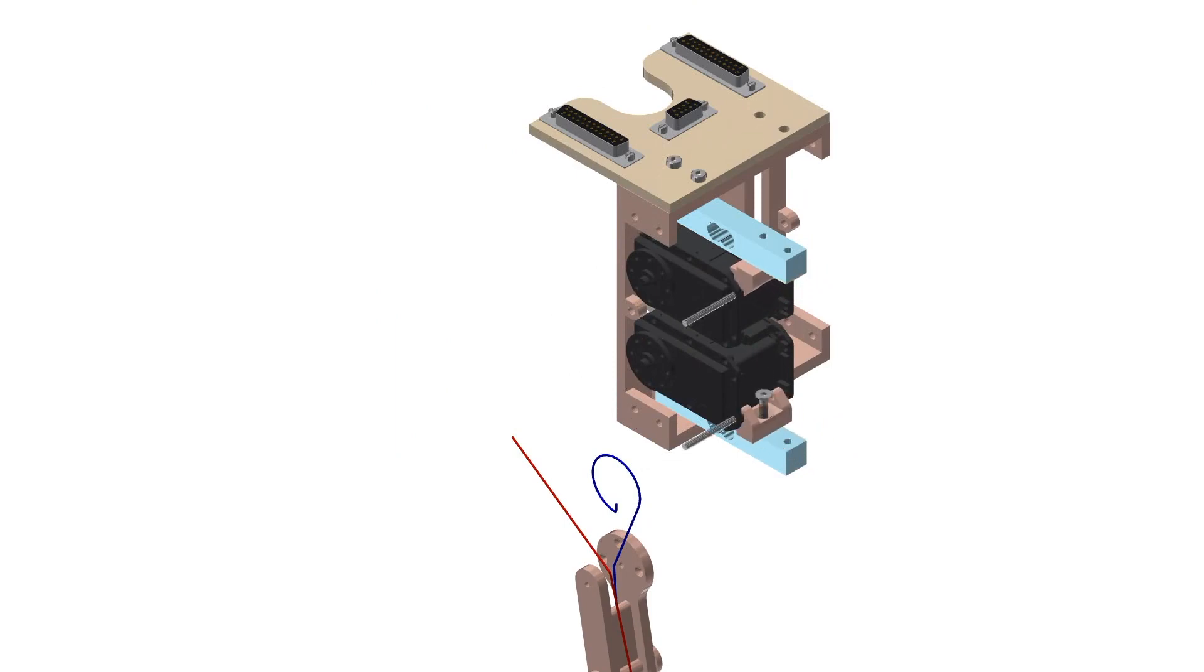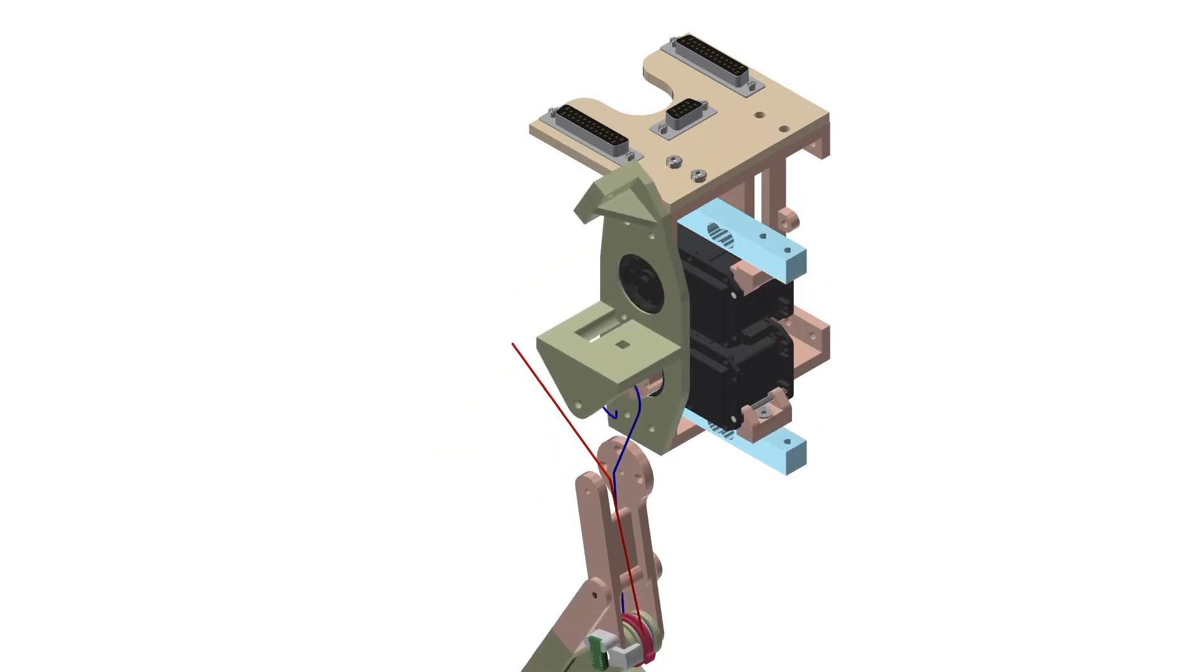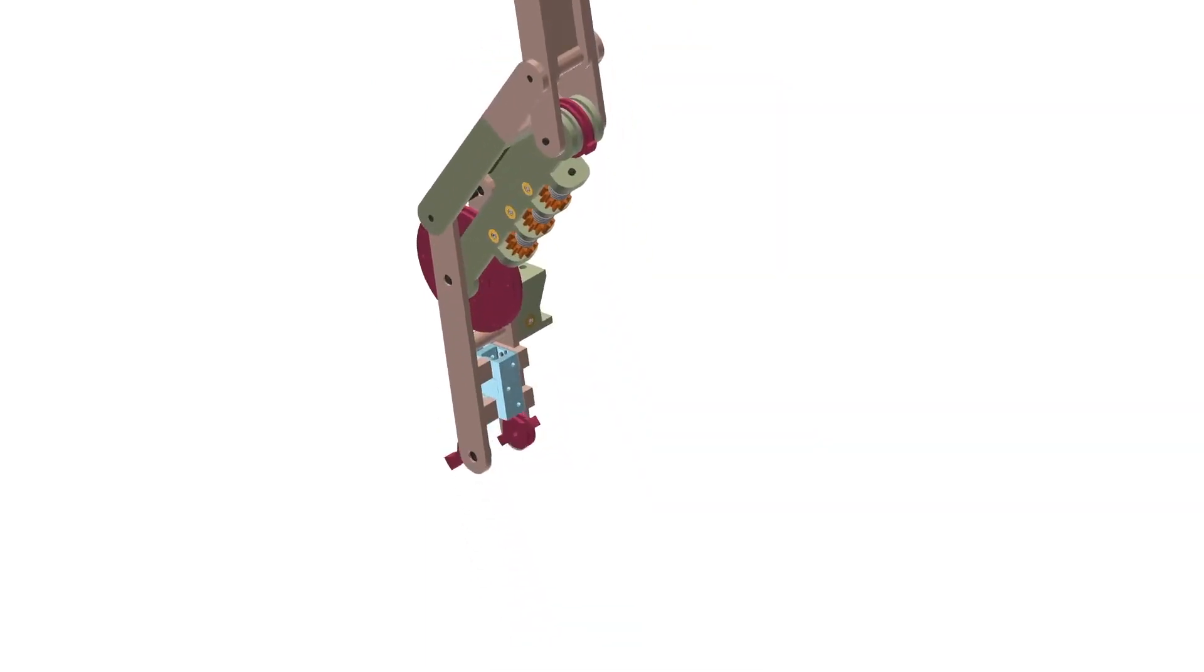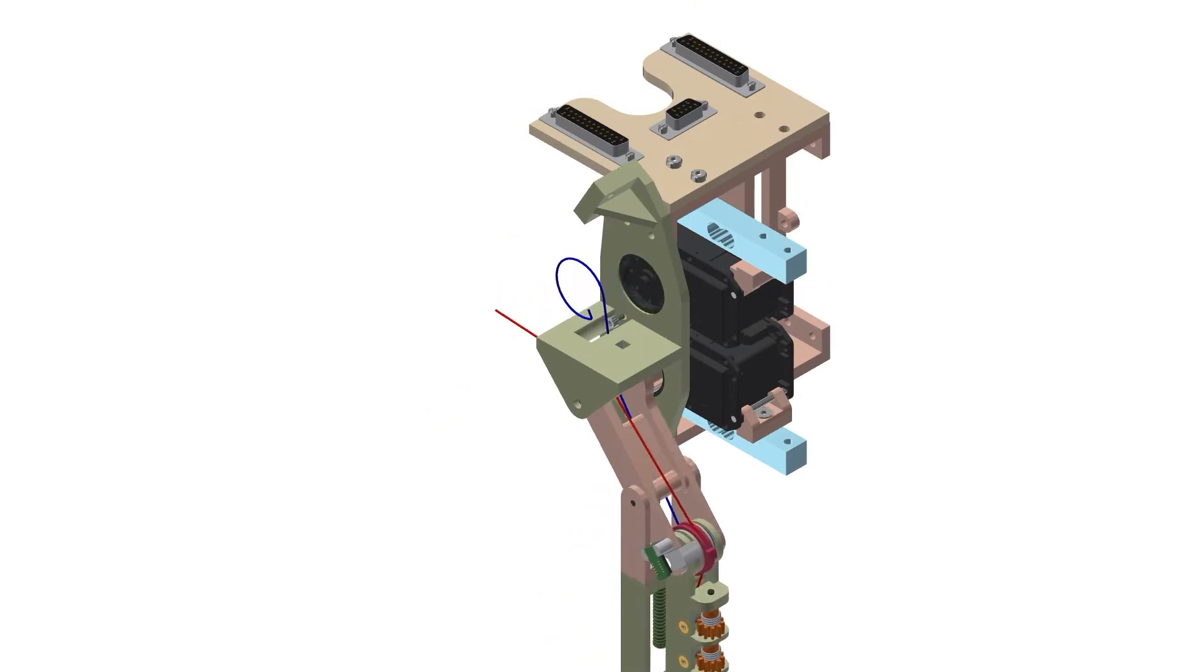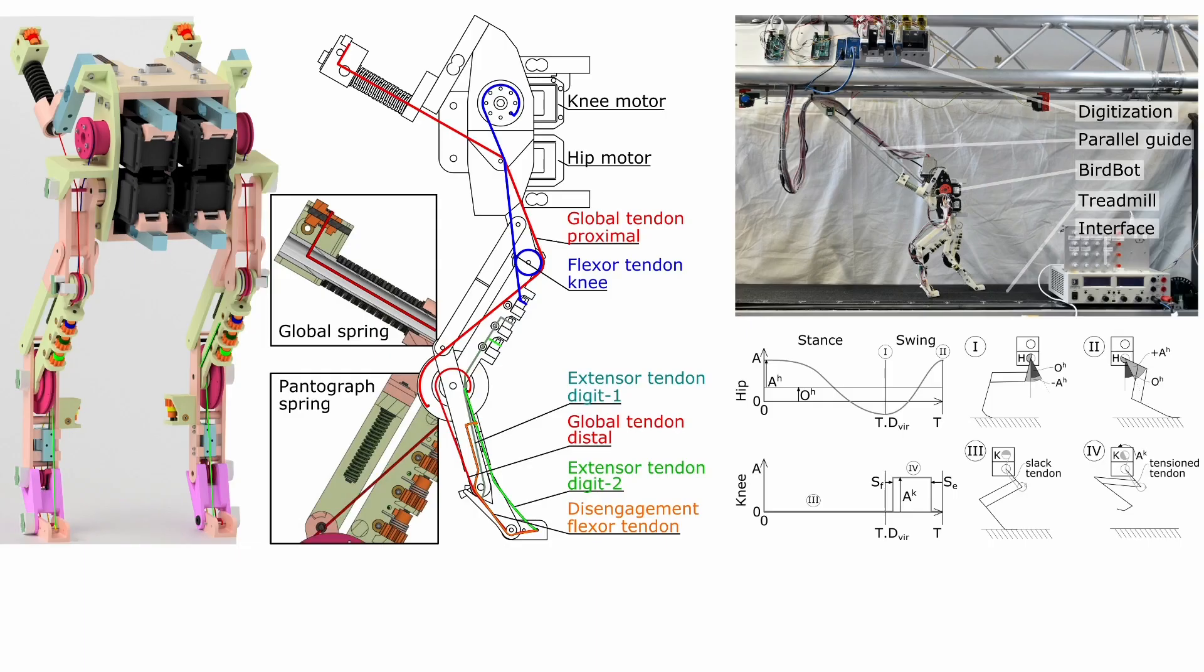BirdBot features two motors in each leg. The hip motor drives the leg forward and backward. The knee motor flexes the leg in leg swing. Leg extension in stance is only provided by the global spring inserting into the global tendon.